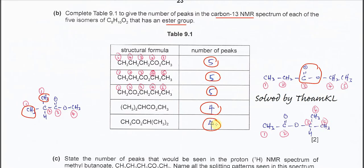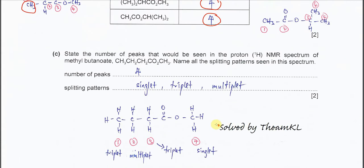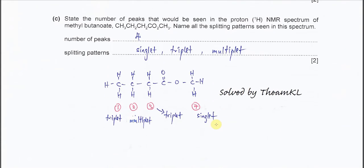That is how to identify the number of peaks in the carbon-13 NMR from the structure. Part C: state the number of peaks seen in the proton NMR for this methylbutanoate, and name all the splitting patterns. First, you must know how the structure looks. For proton NMR, we refer only to protons.